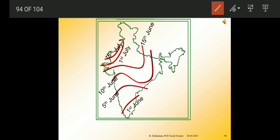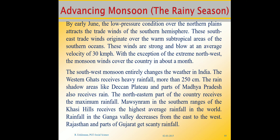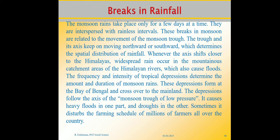Another phenomenon associated with the monsoon is its tendency to have break rainfall. Monsoon rains take place for a few days at a time, then are interspersed with rainless intervals. These breaks in the monsoon are caused by the movement of the monsoon trough, which keeps shifting northward or southward.